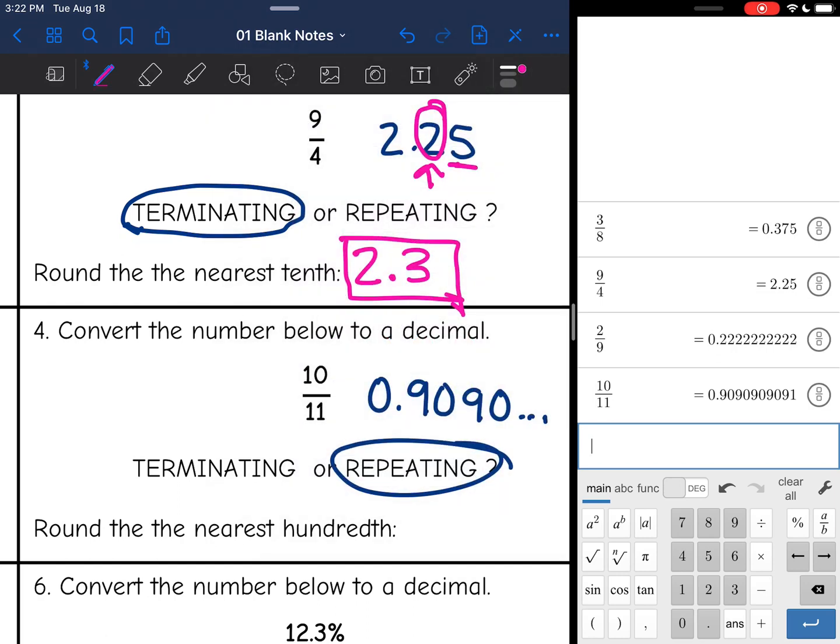And I need to round to the nearest hundredths, which is this second number. After the 0, I have a 9, so that means I need to move the 0 up 1 to round it correctly. So 10 elevenths, or round it to the nearest hundredths, is 0.91.